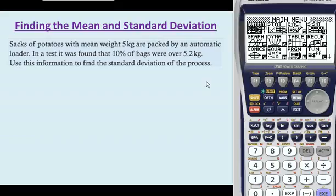First of all, we're going to write the random variable and distribution. Our random variable in this case is simply M, the mass of the sack of potatoes. And M is distributed normally with mean 5 and variance sigma squared, because that's what we don't know.